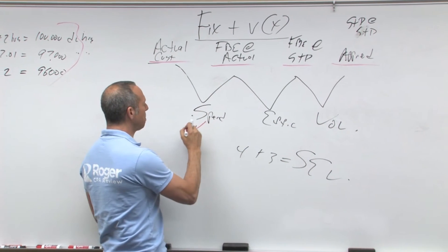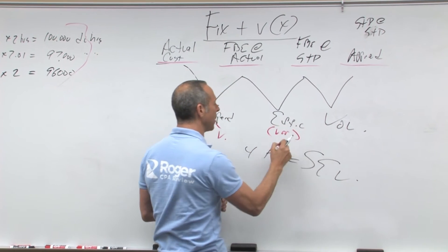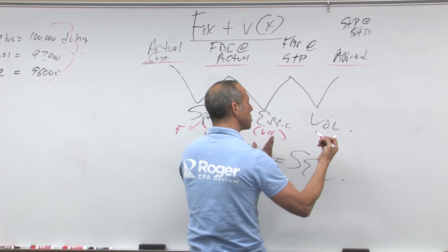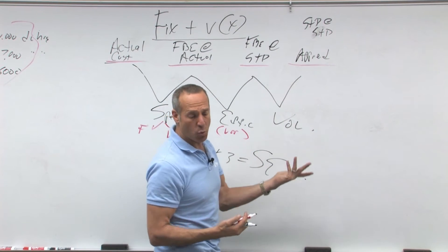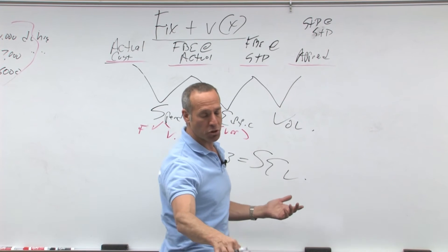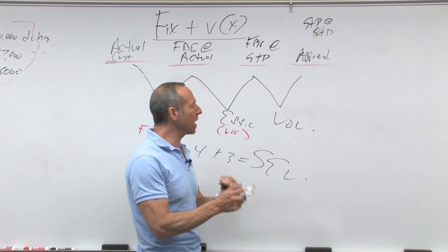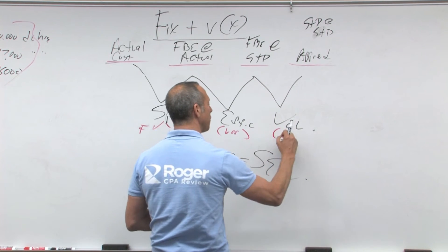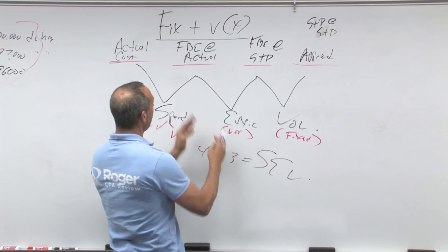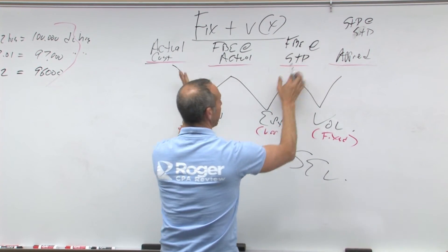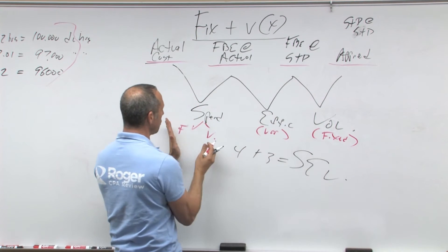Spending could be both fixed and variable. Efficiency is all variable. Volume is production capacity — production volume. Some fixed overhead didn't get applied, and therefore the volume variance is all fixed. Notice how four differences — four numbers giving three variances — gives you SEV: spending, efficiency, volume.